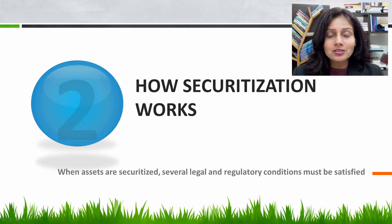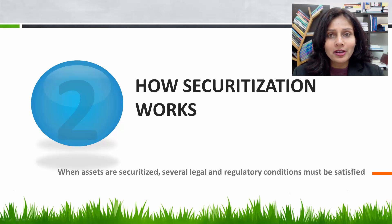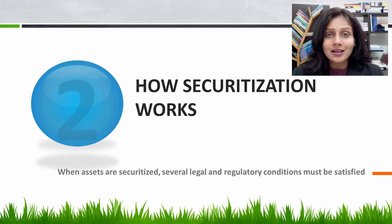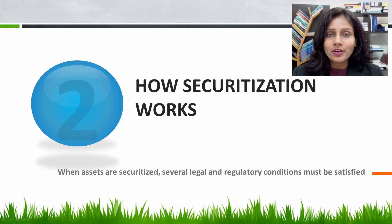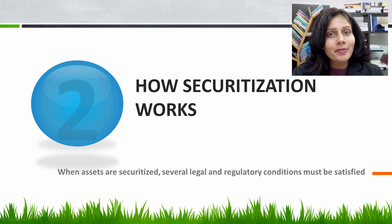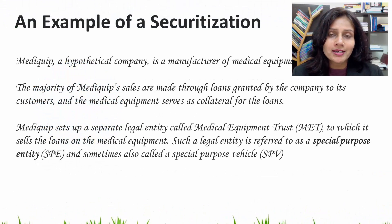I will be describing a typical securitization through the help of an example. Through this example, I will talk about the various parties involved in the securitization process, why they indulge in securitization, and what are the benefits that they achieve. You will also see how these parties perform their respective roles. We will also discuss the various structures of securitization such as time tranching and credit tranching. So let's start with the example of securitization.